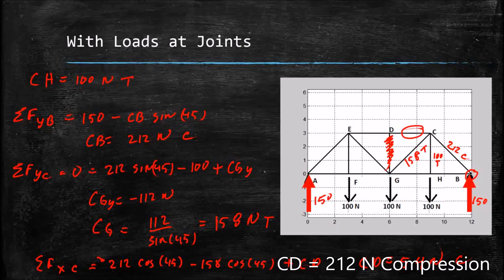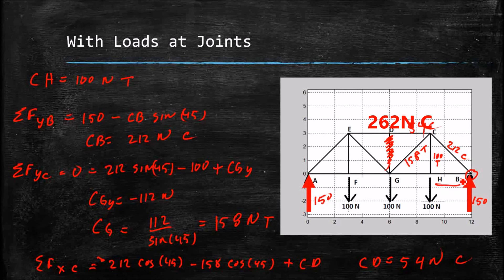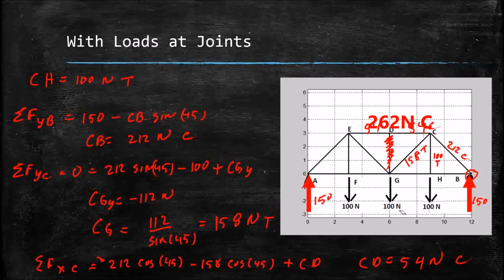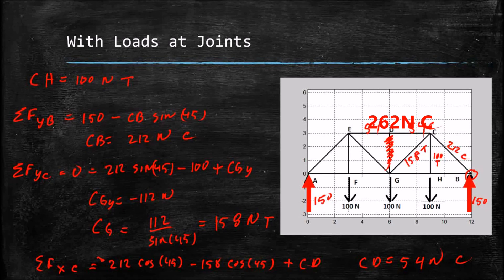That's all the forces for both problems. By symmetry we could infer the remaining members, and once we solved for the force in HB we'd have the entire truss solved. I hope you can recognize zero force members quickly and easily, because that's going to be the key to getting a good grade on an exam — finding that zero force member to make the problem solvable. Thanks for watching, and I'll see you on the flip side.